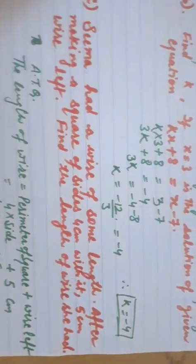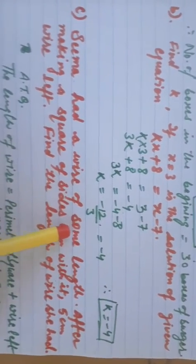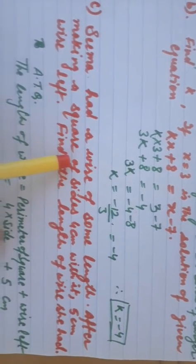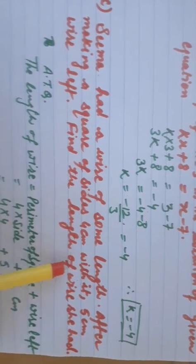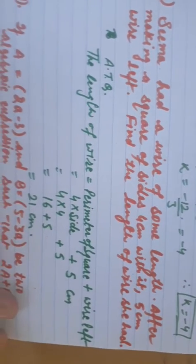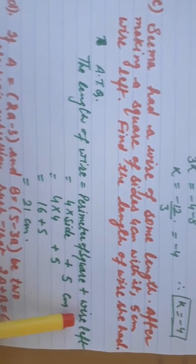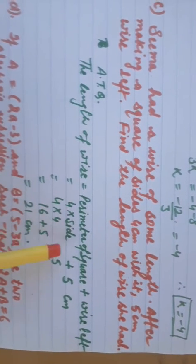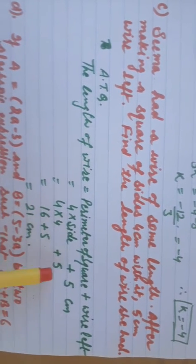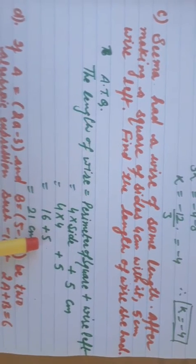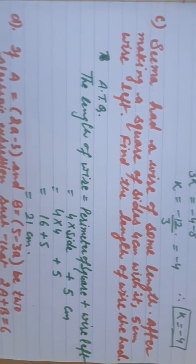Part C: Sima had a wire. After making a square of side 4 centimeters, 5 centimeters of wire was left. Find the total length of wire. The length equals the perimeter of the square plus the remaining wire: 4 times 4 plus 5 equals 16 plus 5, which equals 21 centimeters.